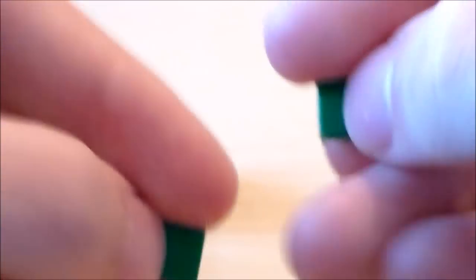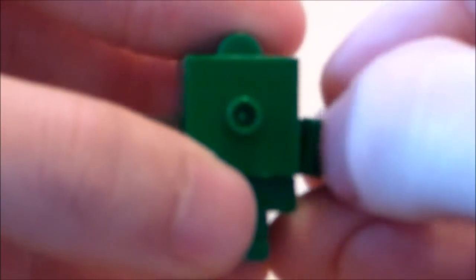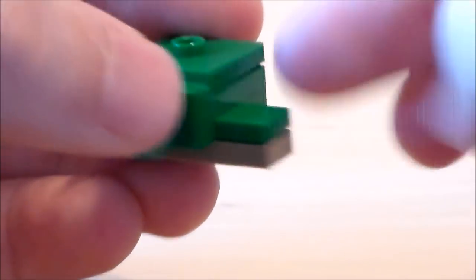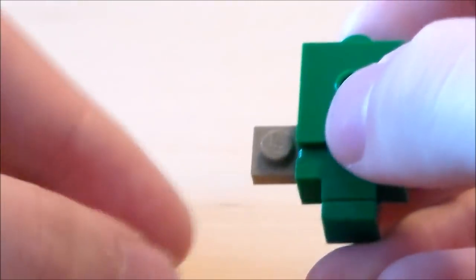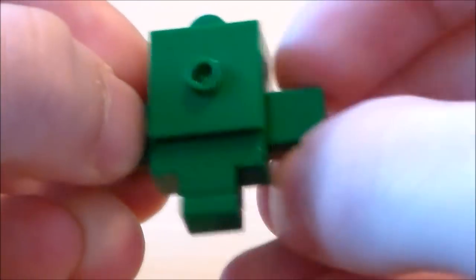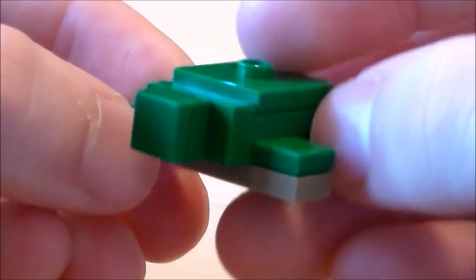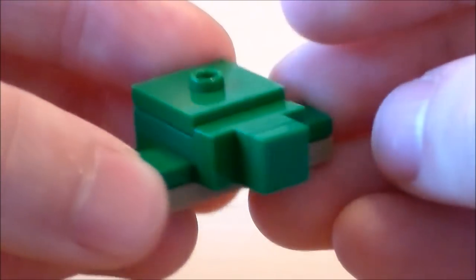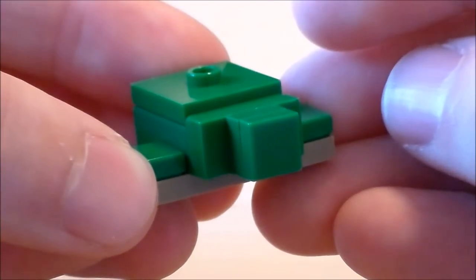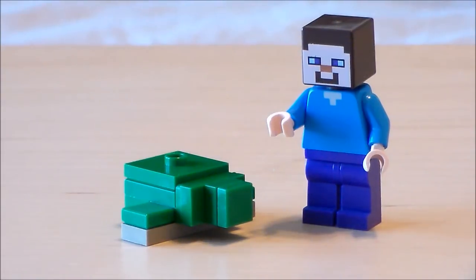Next I'm going to top off the fins for the turtle. I'm going to get two of these green 1x1 tiles and I'm going to pop them on the dark tan plates that are still poking out. These will be the turtle's fins on the side or flippers. There we go, there's our LEGO Minecraft turtle.